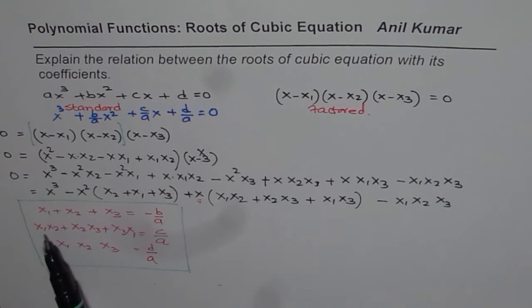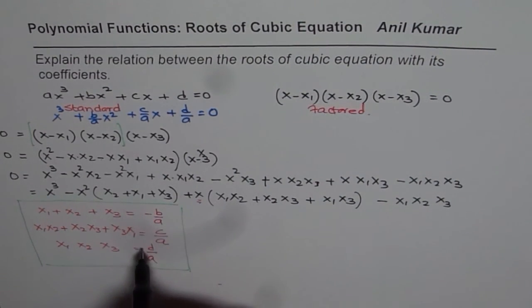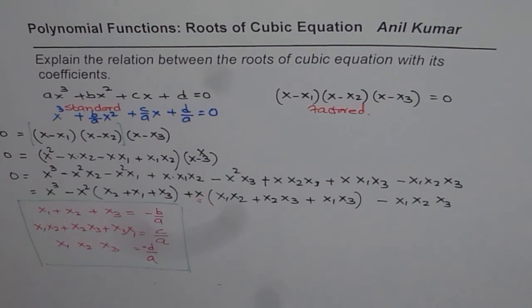Now product of two of the roots and their sum is c/A. And this I wrote wrong. This is negative. So it is -d/A. And product of roots is -d/A.